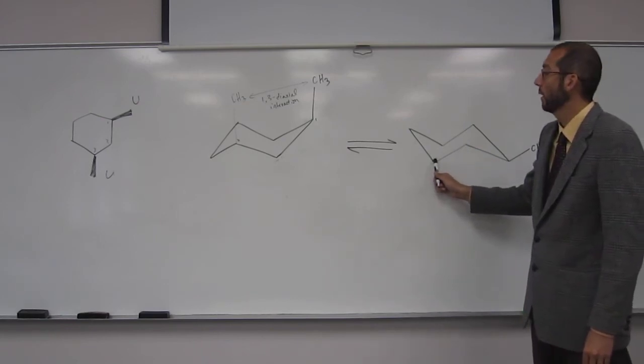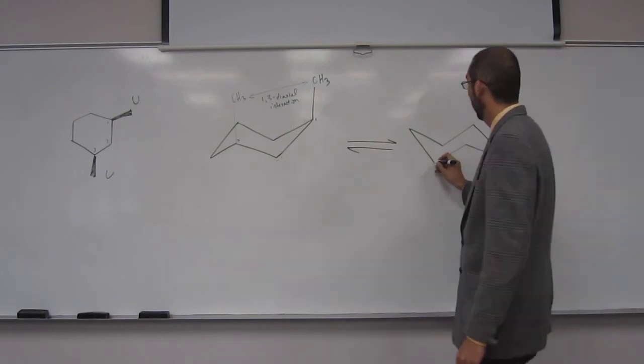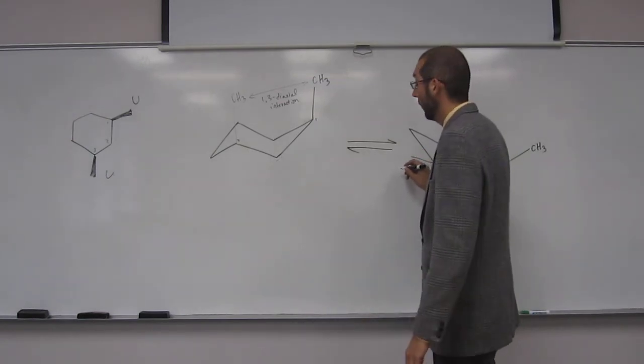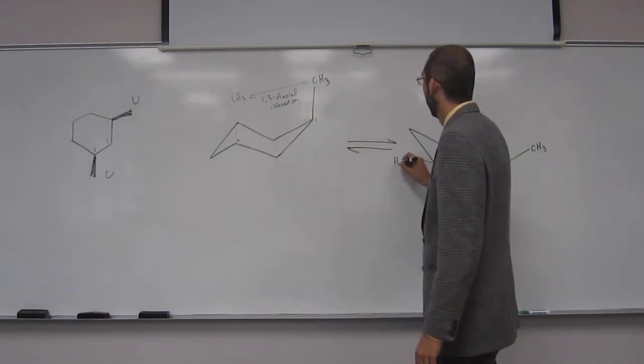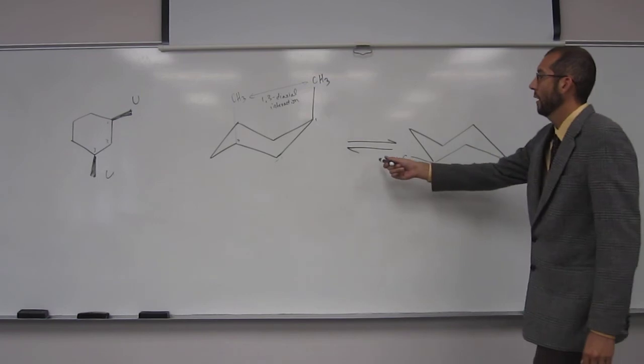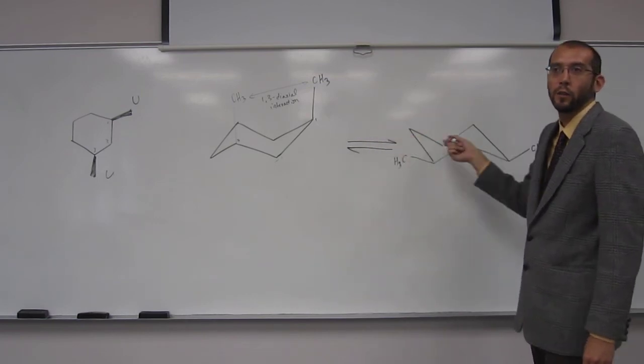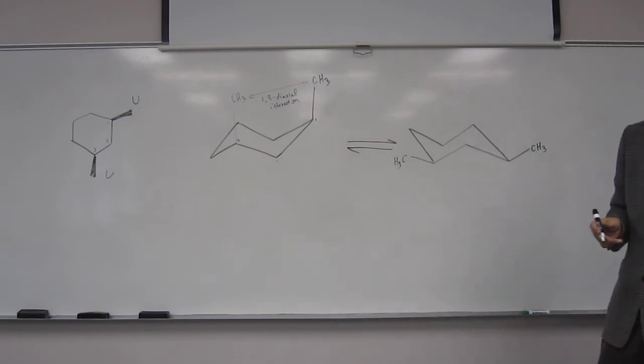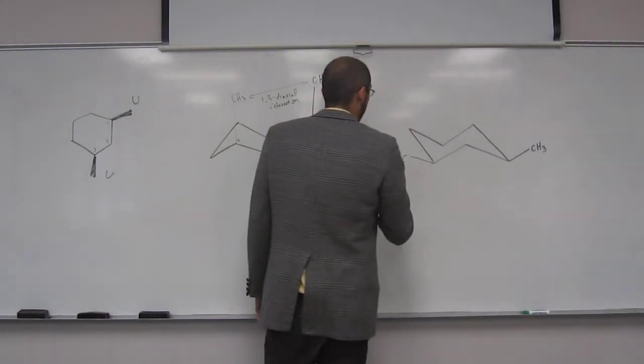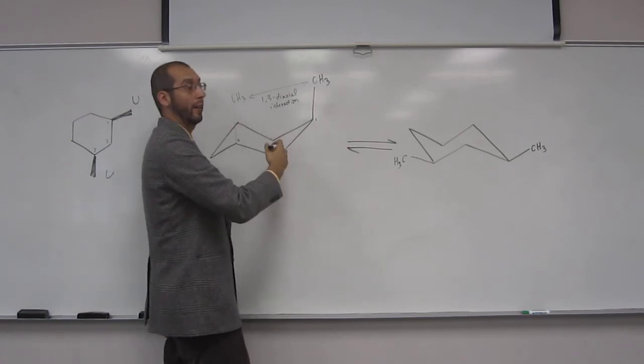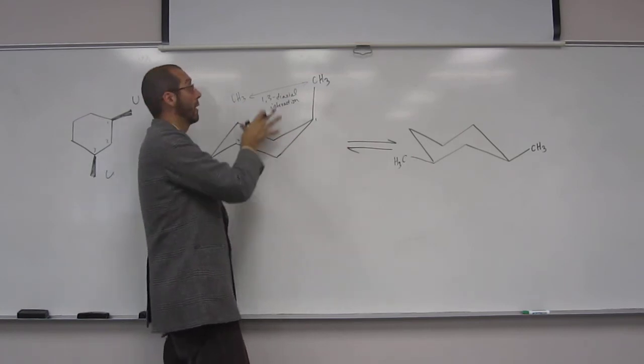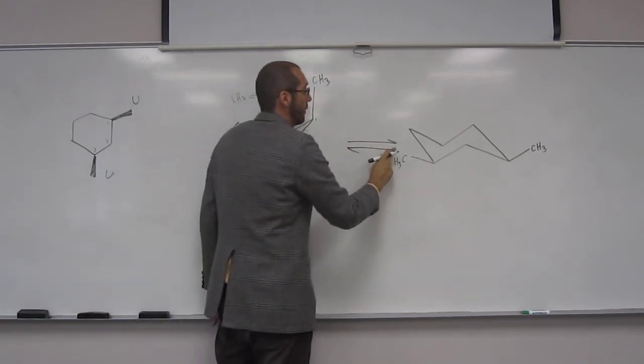Where's this going to be? Equatorial, up. Very good. So are these equilibrium arrows, the way I'm showing it, is that correct - should they be equal? No. Which way should they be? Point and towards? To the right. Because this isn't going to want to go that way because this is steric hindrance because of that diaxial interaction.